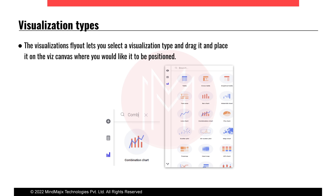The fourth visualization is the text area, a simple visualization in Spotfire used when you want to write content in your dashboard, such as HTML-type elements. Next is the bar chart, used to show continuous or categorical data. For example, if you want to portray the number of students based on gender, you select the gender column on one axis and the number of students column on the other axis, dividing your data into male and female.